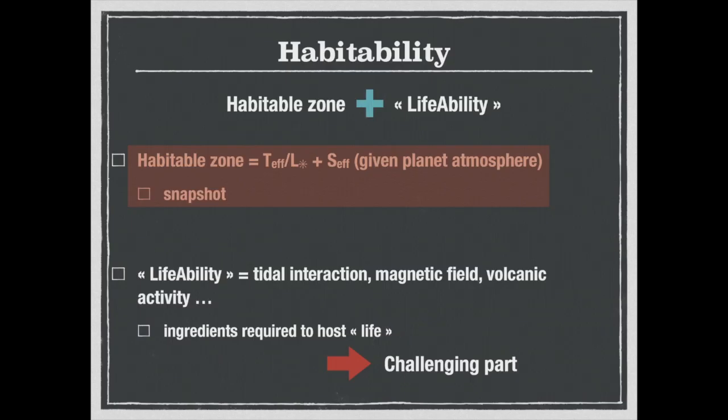But what about habitability? For me, habitability is the sum of the habitable zone plus what I call the life ability. The habitable zone only depends on the effective temperatures and luminosity of the stars, plus the flux received by the planet from the stars given its atmosphere. So this is a snapshot of time T.